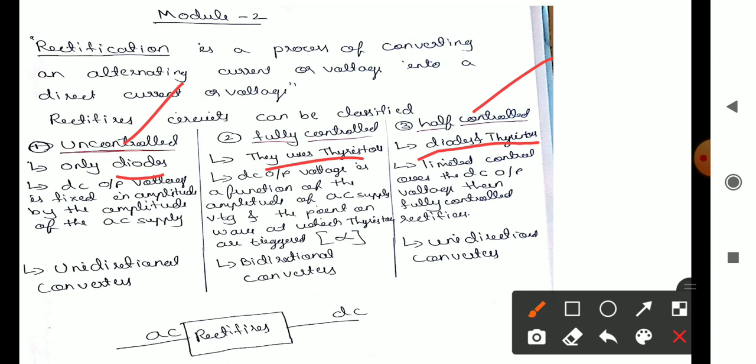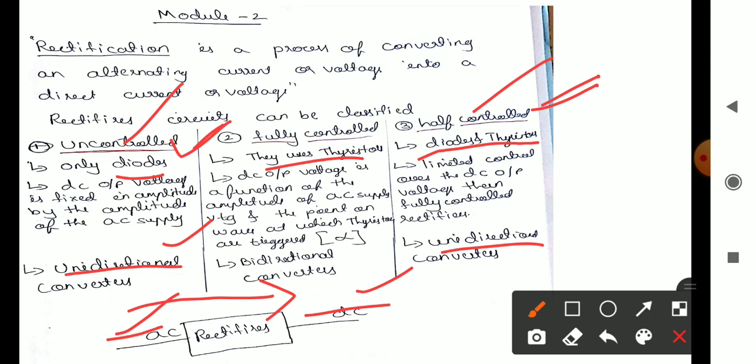Another classification is based on the direction of power flow. If power flows from AC input to DC output, that is a unidirectional process. Uncontrolled and half controlled rectifiers are unidirectional converters, where power flows only from AC to DC.